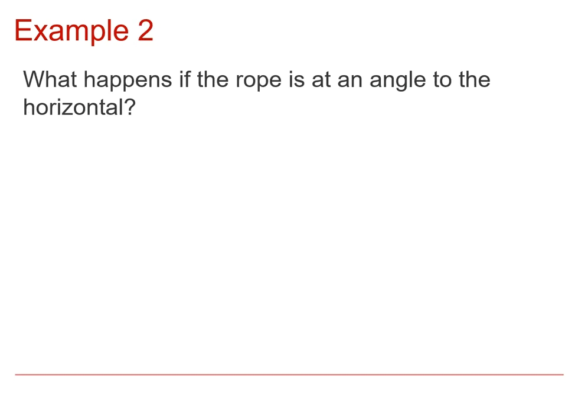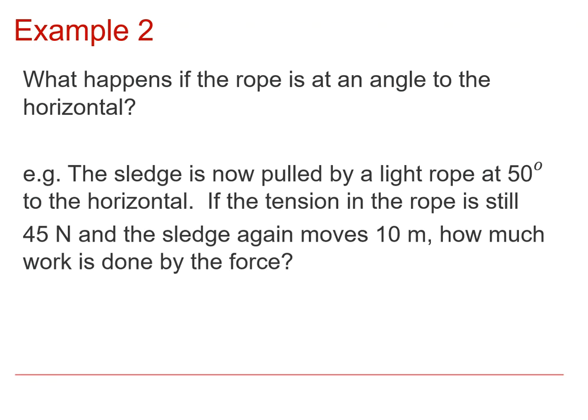So, that then leads us to ask, well, what if the rope wasn't horizontal? What if it was at an angle to the horizontal? So, let's say it was at an angle of 50 degrees to the horizontal. Still with a tension of 45 newtons. And the sledge still moving by 10 metres. How much work is now done?